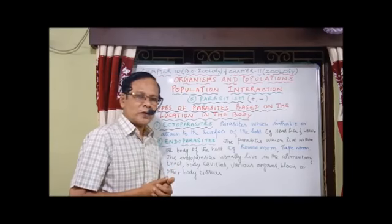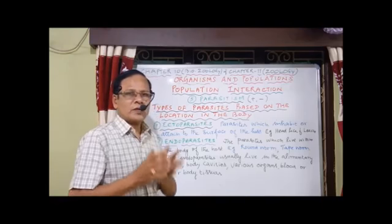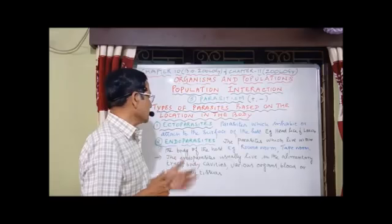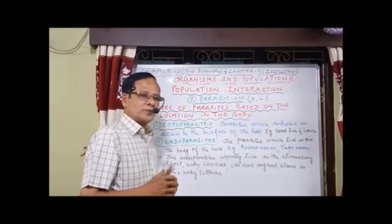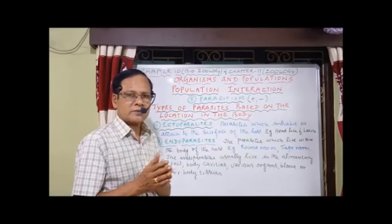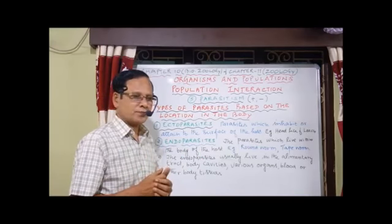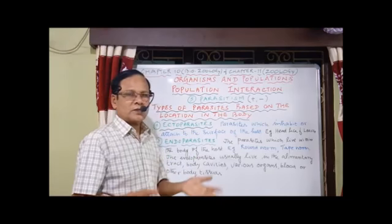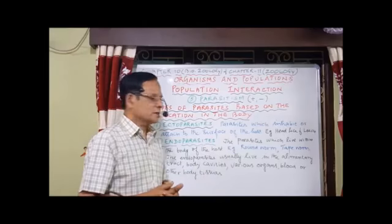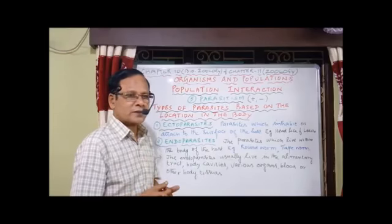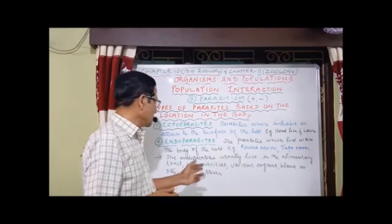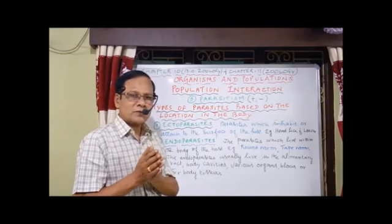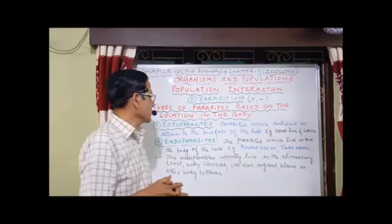Those parasites which live within the body of the host are called endoparasites. For example, roundworm and tapeworm are found in the alimentary tract. We have the malarial parasite found in the blood. The filarial worm is formed in the lymphatic system. The endoparasite living in the alimentary tract includes Ascaris and tapeworm. The malaria parasite lives in the blood, and the filarial worm lives in the lymph vessels or lymphatic system.